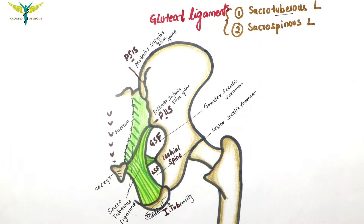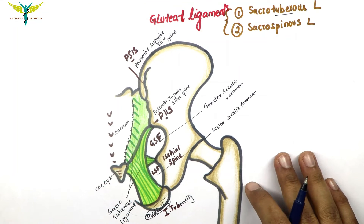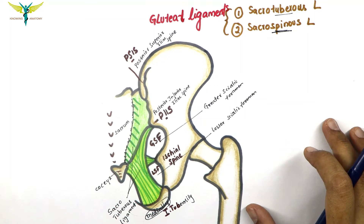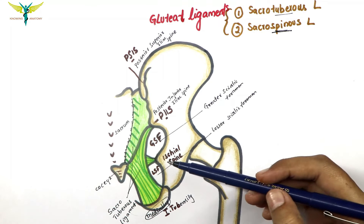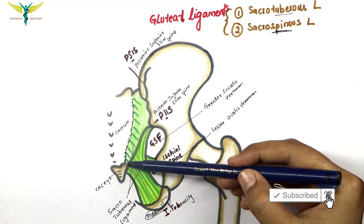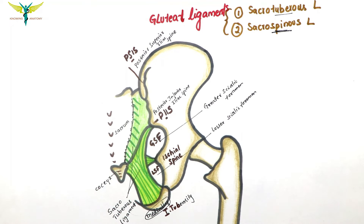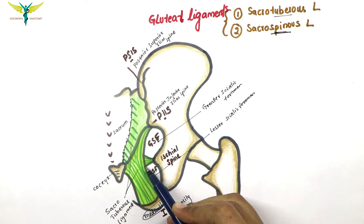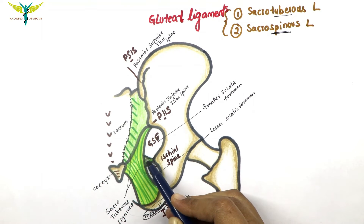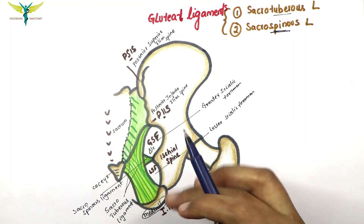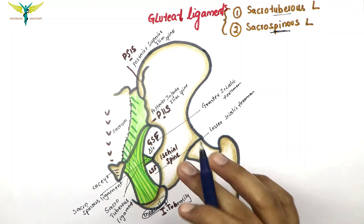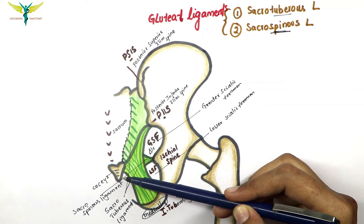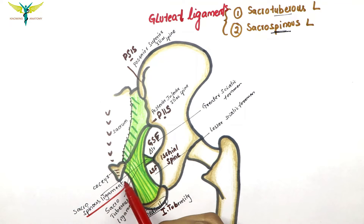The second important ligament of the gluteal region is the sacrospinous ligament. As the name indicates, it extends from the ischial spine to the side of the sacrum and the coccyx. The sacrospinous ligament is a triangular ligament — a triangular sheet of fibrous tissue — which extends from the ischial spine to the side of the sacrum and the coccyx.